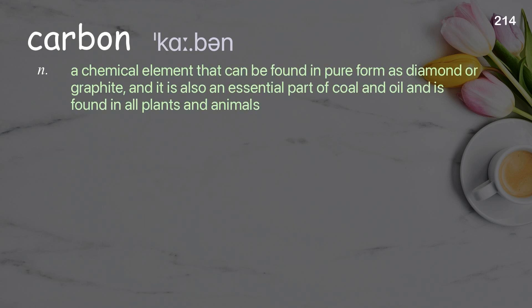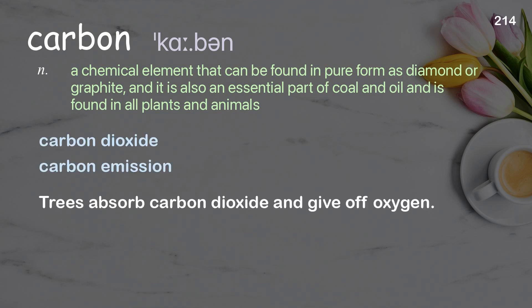Carbon: a chemical element that can be found in pure form as diamond or graphite; an essential part of coal and oil and is found in all plants and animals. Examples: carbon dioxide; carbon emission. Trees absorb carbon dioxide and give off oxygen.